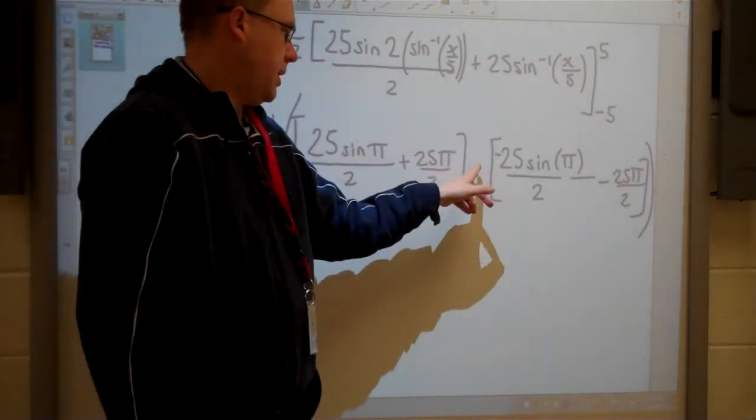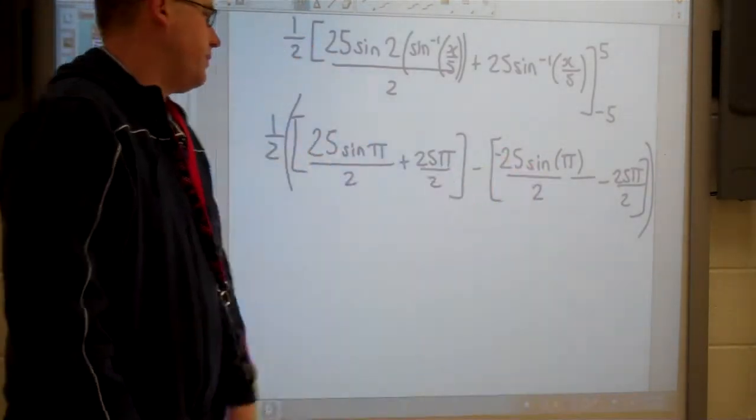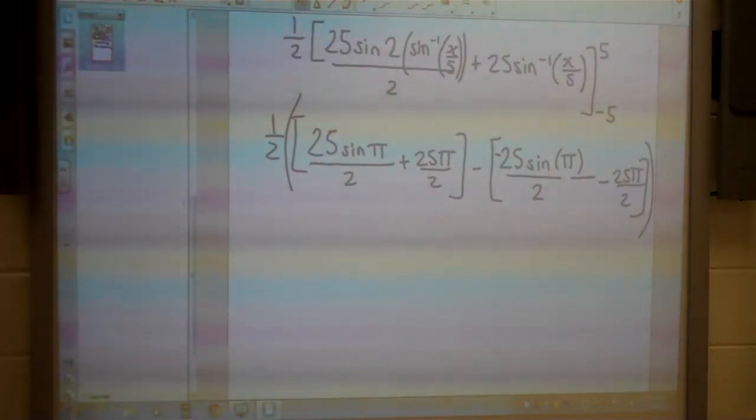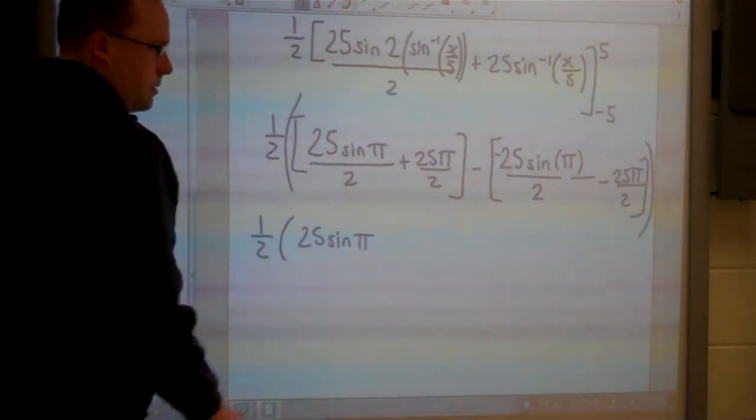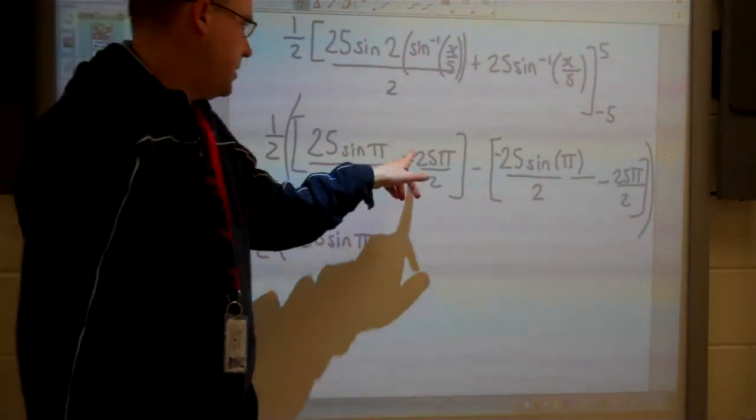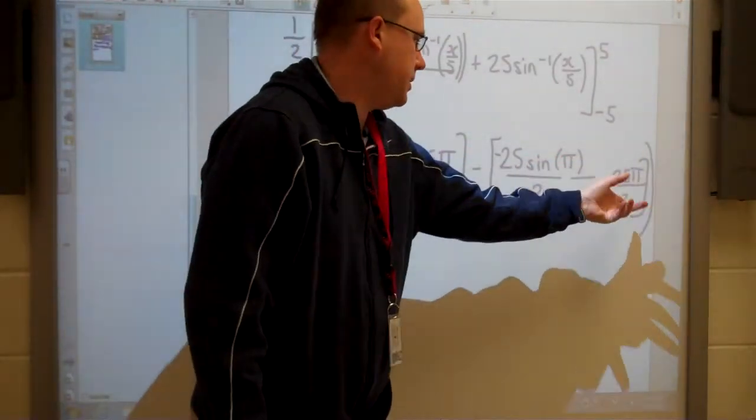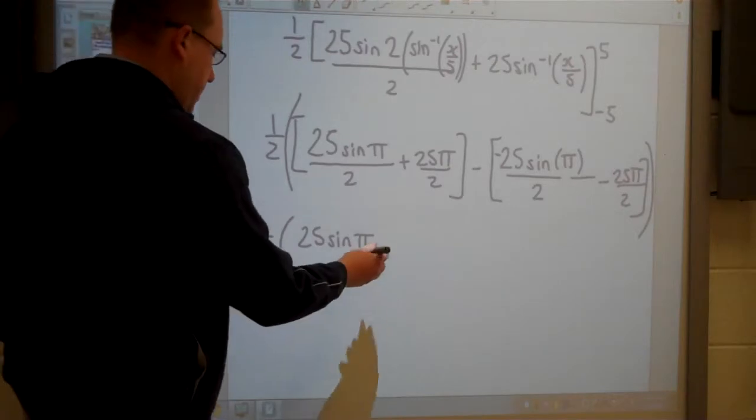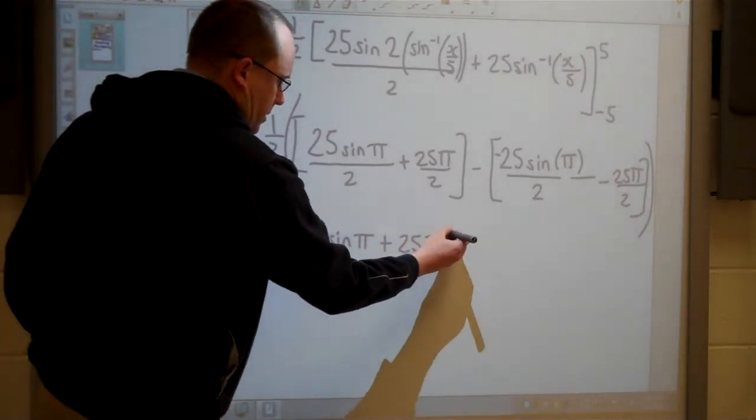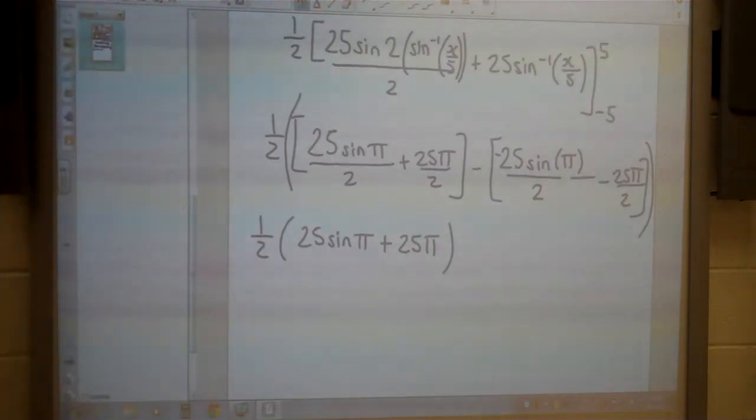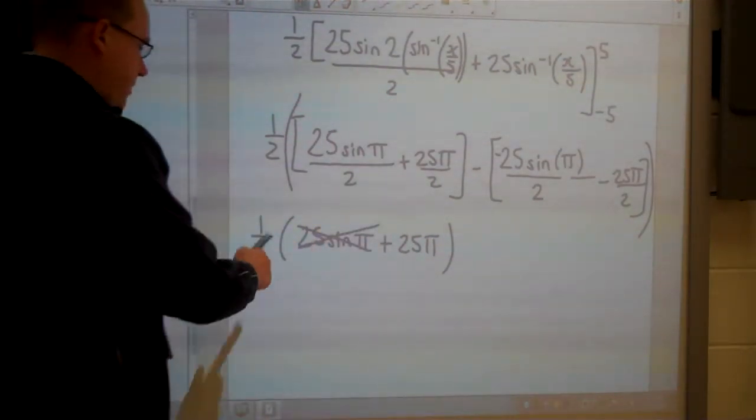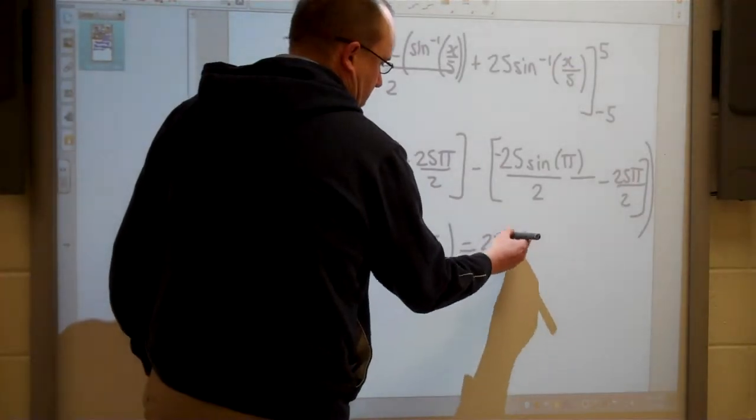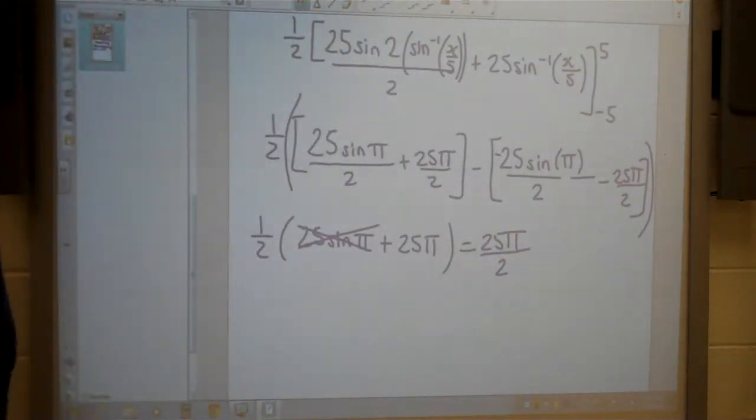So 25 sine pi over 2 plus 25 sine pi over 2 would be 50 sine pi over 2. Or I could just say 25 sine pi. And 25 pi over 2 minus negative 25 pi over 2 would be 50 pi over 2 which is just 25 pi. Also, I know that the sine of pi is going to be 0. So this term actually cancels. And so actually I have a half of 25 pi which is 25 pi over 2.